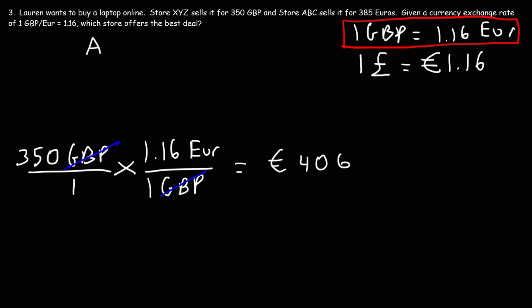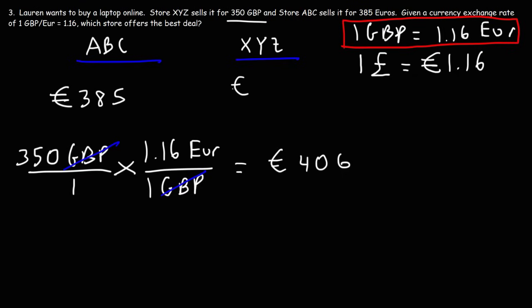Now let's compare: Store ABC is selling the laptop for 385 euros, while Store XYZ is selling it for 350 British pounds, which converts to 406 euros. Since 385 euros is the lower price, Store ABC offers the best deal for the laptop. So Lauren, if she wants to save money, should buy the laptop at Store ABC.